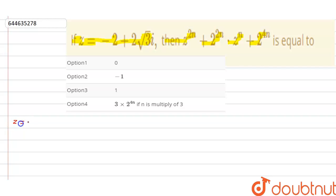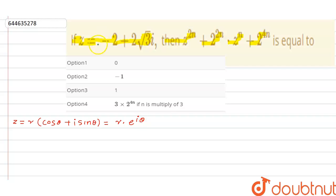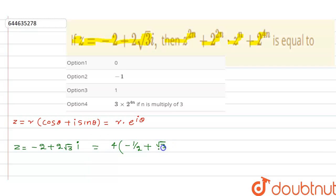If z is given in parametric form as r into (cos θ + iota sin θ), then this can be written in Euler form as r·e^(iθ). So here, z is equal to minus 2 plus 2 root 3 iota. Just take 4 as common, so this becomes 4 into (minus 1/2 plus root 3 by 2 iota).